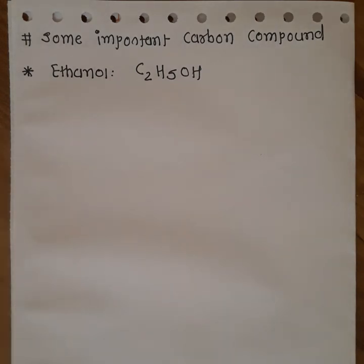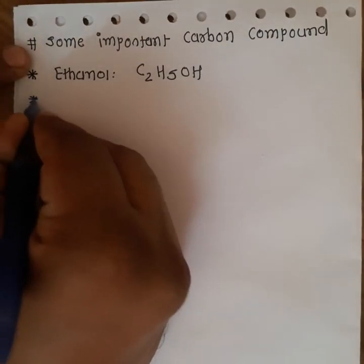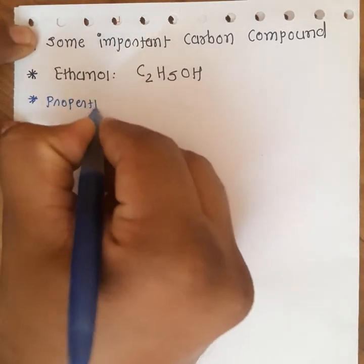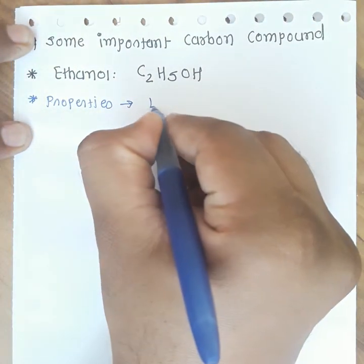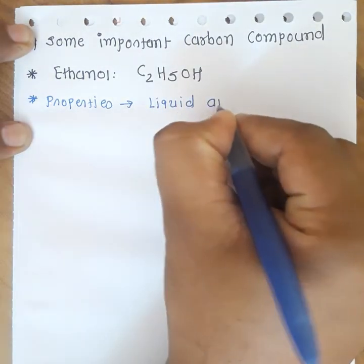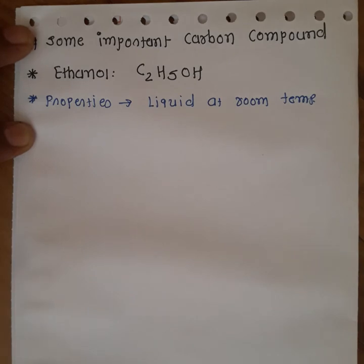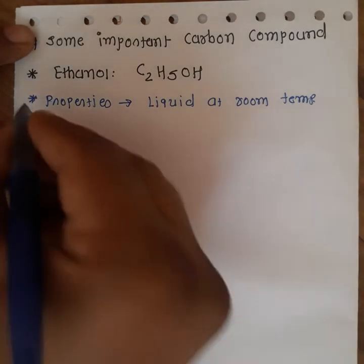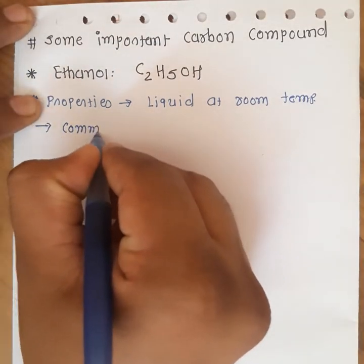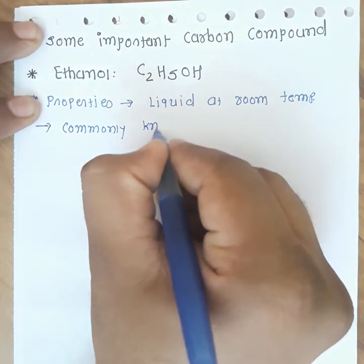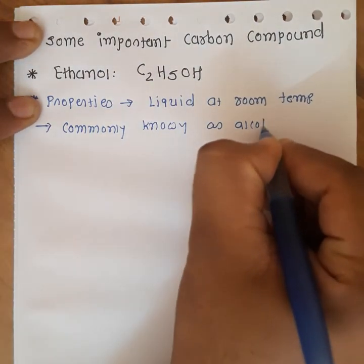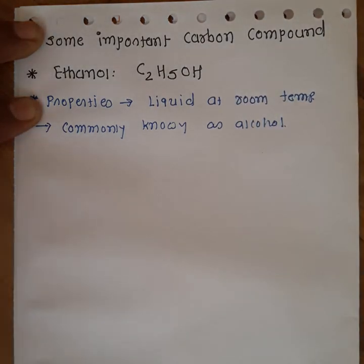Hello students, in this video we are going to discuss some important carbon compounds. In our syllabus we have mainly two important carbon compounds: first is ethanol and second is ethanoic acid. First, we discuss the properties of ethanol. Ethanol is a liquid at room temperature, commonly known as alcohol, and is the active ingredient in all alcoholic drinks.